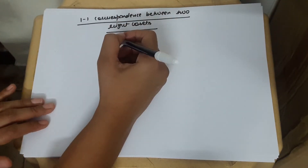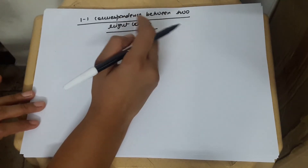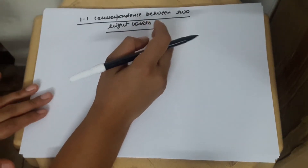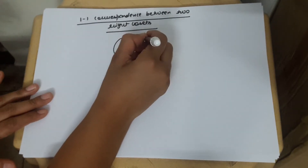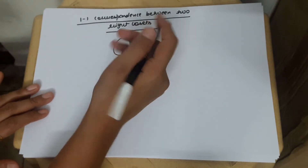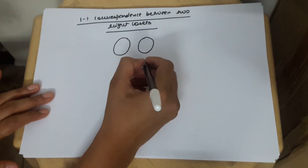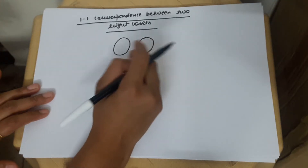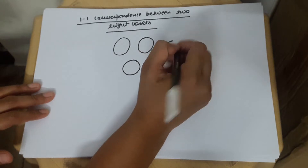In an earlier video, I had proved a theorem which states that two right cosets are either identical or disjoint. Suppose you have these two cosets — either there is nothing common between them, or one will cover the other, meaning the two cosets are the same. These are the only two possibilities.